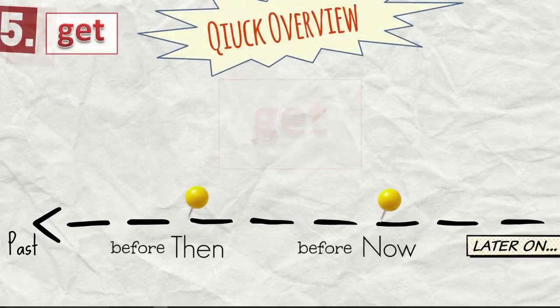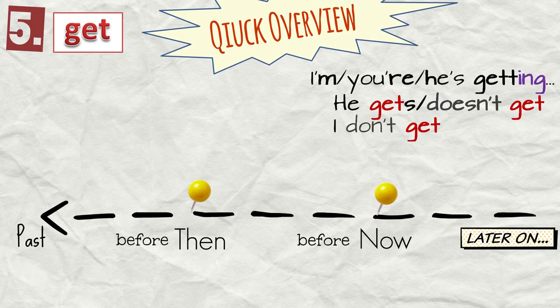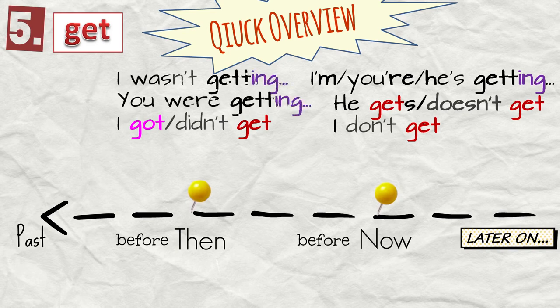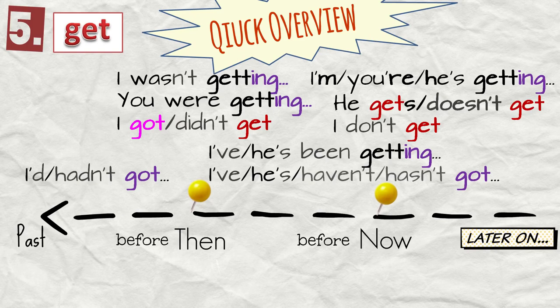Get. Quick overview again. I get. I don't get. He gets. He doesn't get. I'm getting. You're getting. He's getting. I got. I didn't get. I was getting. I wasn't getting. You were getting. I've got. He's got. I've been getting. He's been getting. I'd got. I hadn't got. I'd been getting.